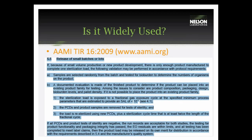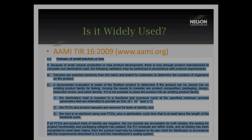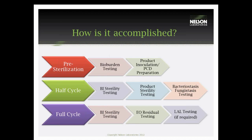The AAMI TIR-16 document states that for small volume production you can release products based on specific test criteria. There are three phases to batch release: pre-sterilization, which includes bioburden and PCD testing and product inoculation preparation; followed by a half cycle, which will include all the clinical units and all the test units; and then those units will be removed from the load and the full cycle will be run with the following set of testing.